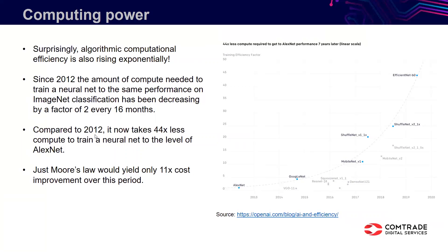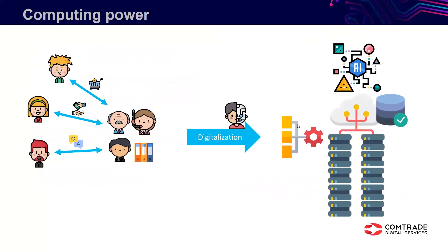If we take a model from 2012 and look at how much computation it would take today to accomplish the same task using newer algorithms, it requires 44 times less compute than it used to. So if we return to that model company of ours, I've added this as a kind of representation of compute. Another strong enabler for anything relating to AI is data.